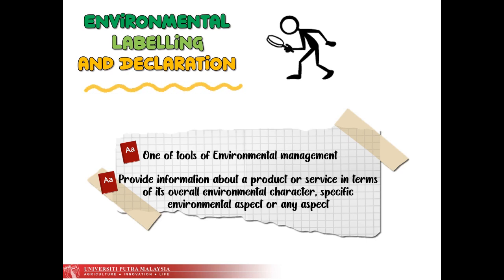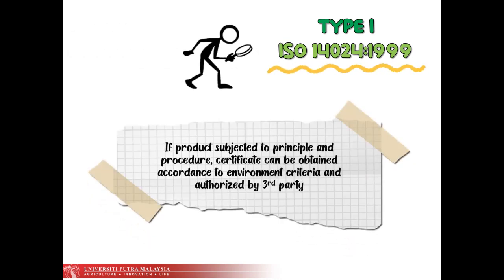It is also subject to ISO 14000 series and relates to other applicable standards which are ISO 14021, ISO 14024, and ISO 14025. Let's revise the three ISOs mentioned. The first one is Type 1 ISO 14024 1999. This ISO mentions that certification of ecolabel can only be obtained if the products or services are subject to the principles and procedures stated in accordance with international standards and environmental criteria, and the authorization by third party is required.